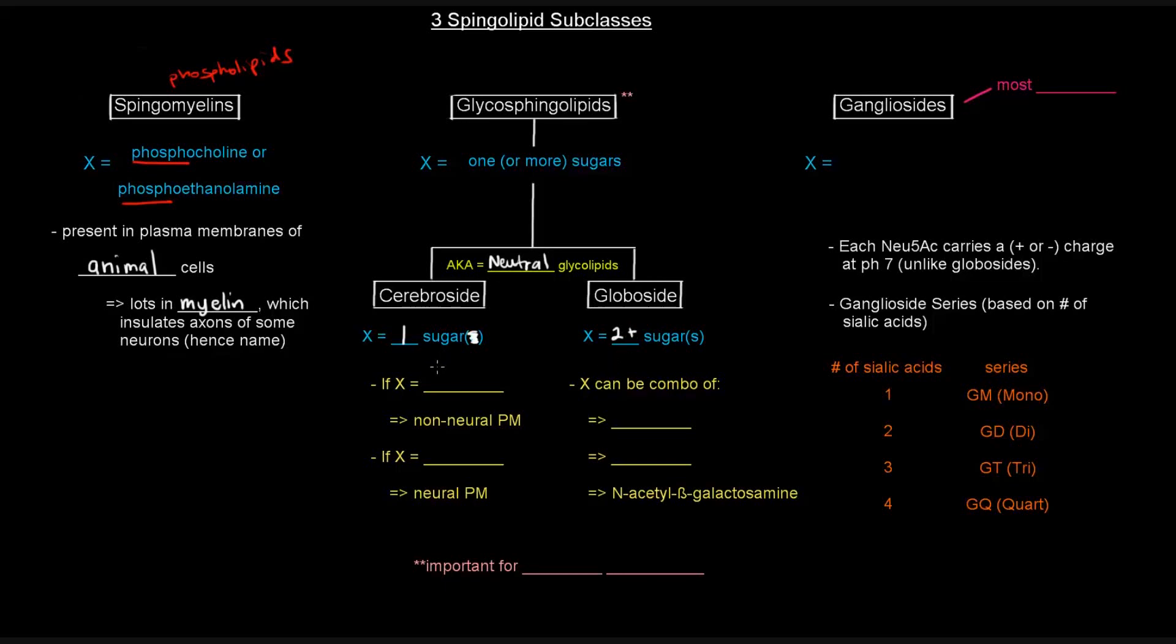So, cerebrosides, if the one sugar is a glucose, you'd expect that membrane lipid or that cerebroside, specifically, to be present in non-neural plasma membranes. If that X is instead galactose, if the one sugar that's attached is galactose, you'd expect that to be present in neural plasma membranes.